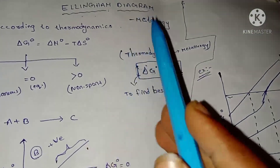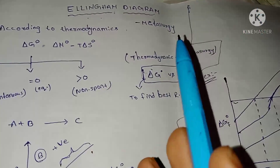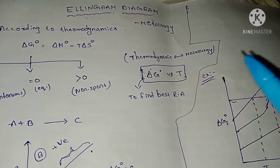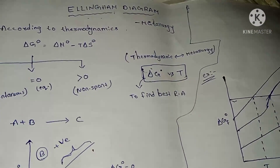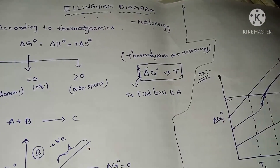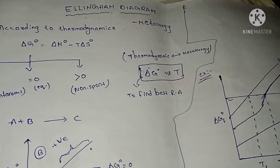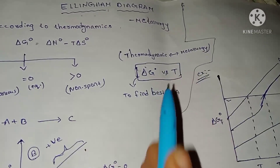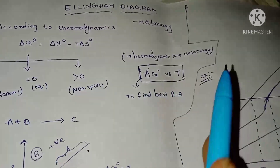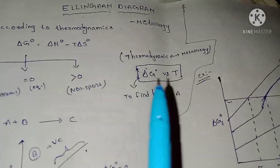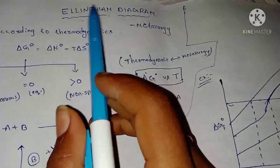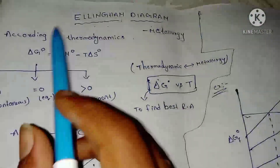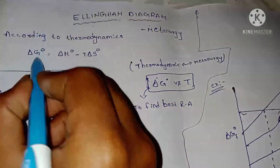Ellingham Diagrams — let us see what we are going to do. This is a graph. There is a graph, so don't be panicked — this class will be made clear. According to thermodynamics, we are going to read about this.